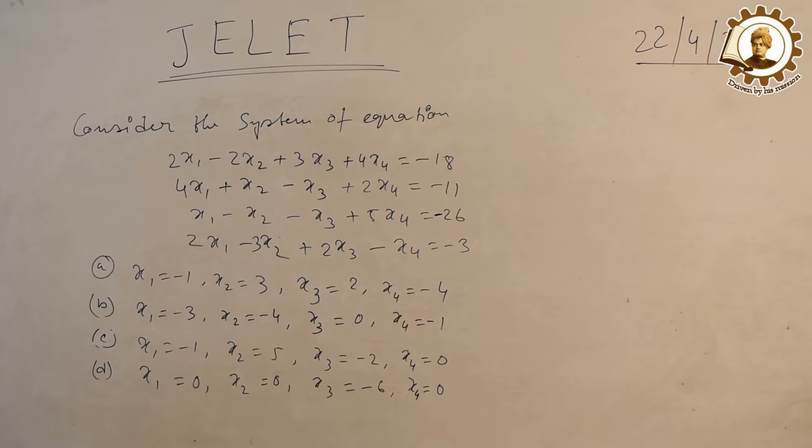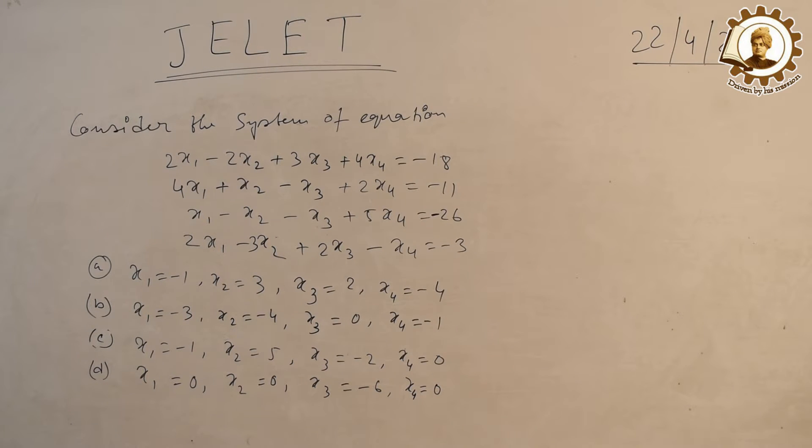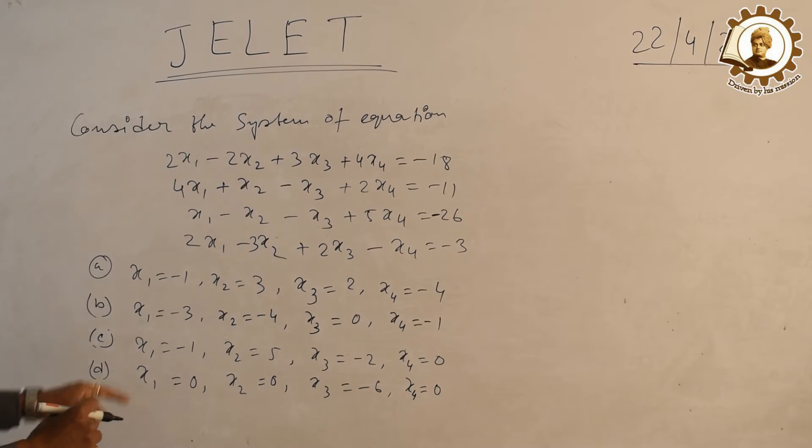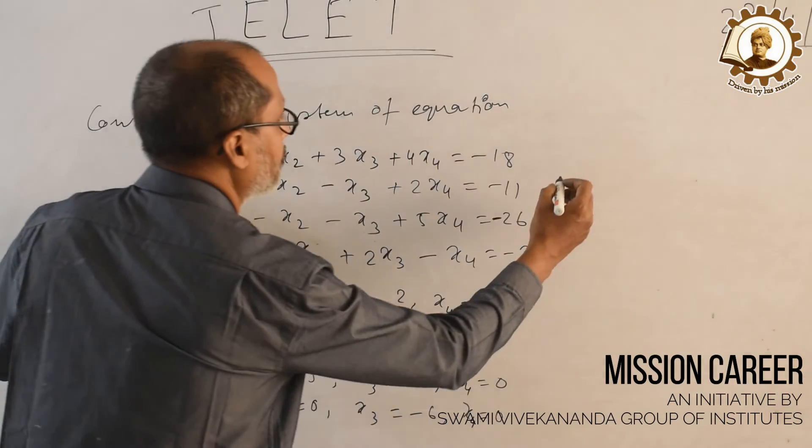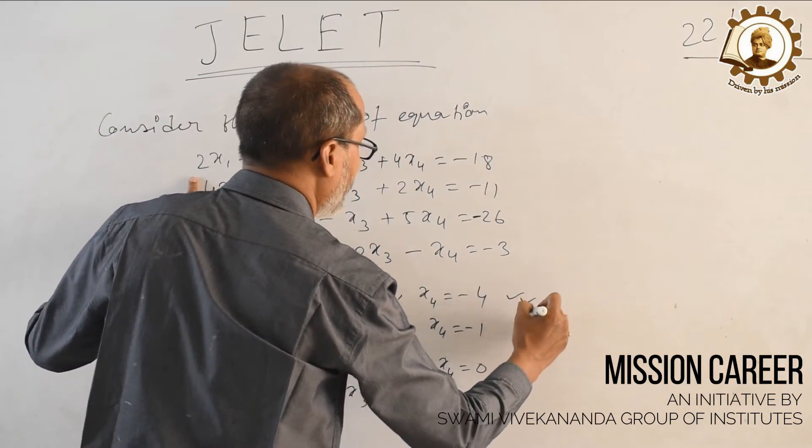It is better if you apply the by-option method. That means we do not need to solve the equation by Gauss elimination method. We can directly apply the values which are given. For example, choose any one equation. Taking option A, x1 equals minus 1.